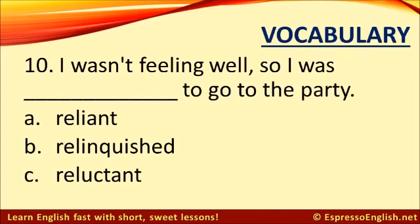Number ten. I wasn't feeling well, so I was... to go to the party. The correct answer is C. Reluctant. I wasn't feeling well, so I was reluctant to go to the party. If you are reluctant to do something, it means you don't want to do it, so you hesitate.